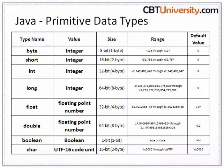Long: the long data type is a 64-bit 2's complement integer. Use this data type when you need a range of values wider than those provided by int. Float: the float data type is a single precision 32-bit IEEE 754 floating point. As with the recommendations for byte and short, use float instead of double — this saves memory.